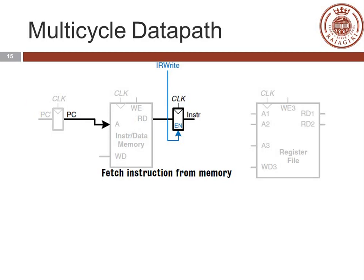Now we are starting by the same process. The address of the instruction will come from the program counter and be fed to our instruction/data memory. In a later cycle, we will have data from this memory. So first, we save the fetched instruction somewhere — for that we will use an instruction register. The instruction is written into that instruction register using an IR write signal.